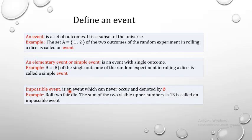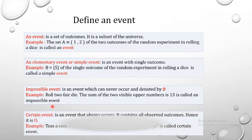An impossible event is an event which can never occur, denoted by phi. For example, rolling two fair dice and getting a sum of 13 is impossible, since the maximum sum is 12. Similarly, getting the number 7 on a single die is an impossible event. A certain event always occurs — it contains all observed outcomes, hence it is omega. For example, when tossing a coin, the event that the visible face is head or tail is a certain event.